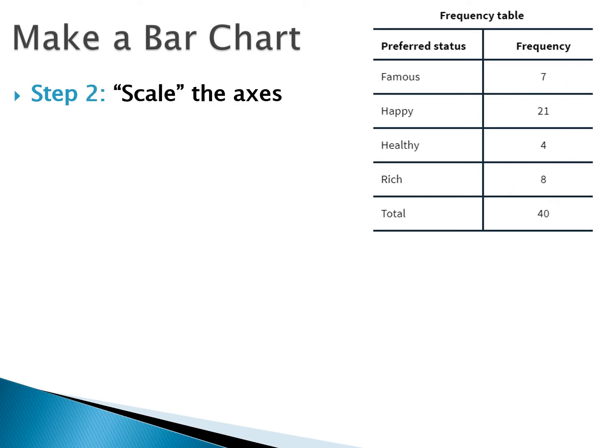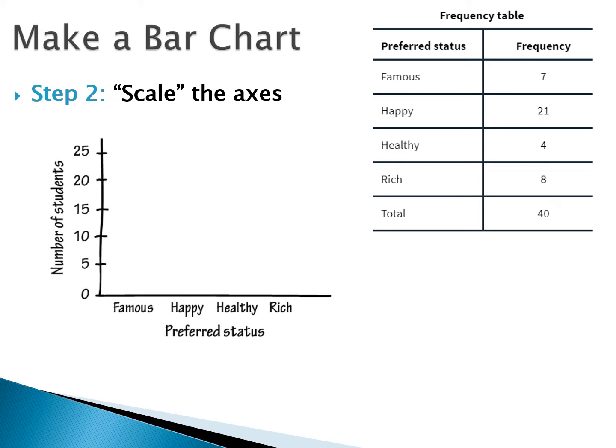Step two: we want to scale the axes. This is the part where most people lose points. When we scale the axes, we want to do it in a way where we can space out all our tick marks evenly, space out our bars evenly, and make them large enough that we can display all of the data.